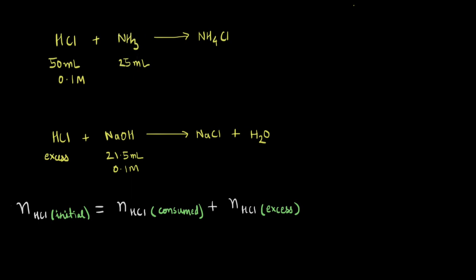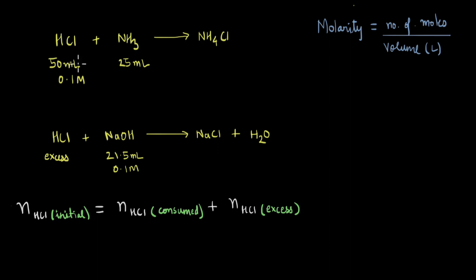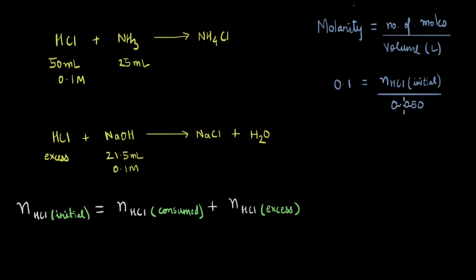Let's start by calculating the initial number of moles. For that we use the formula for molarity, which equals the number of moles divided by the volume in liters. We know the volume and the molarity, so we write: 0.1 equals the number of moles of HCl initially present divided by the initial volume, which is 50 ml or 0.05 liters. Solving this, the initial number of moles of HCl is 0.005.